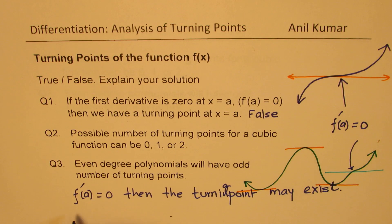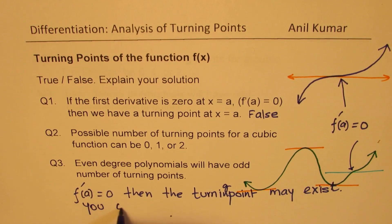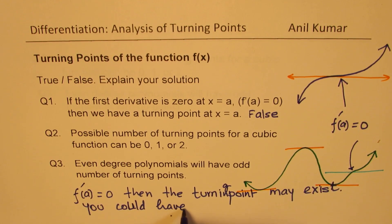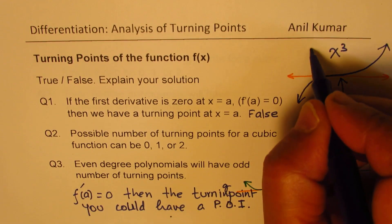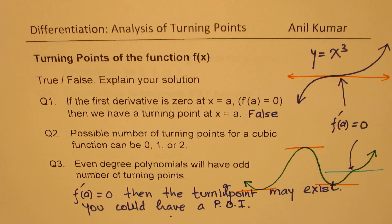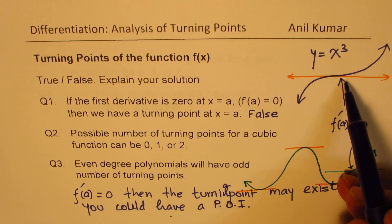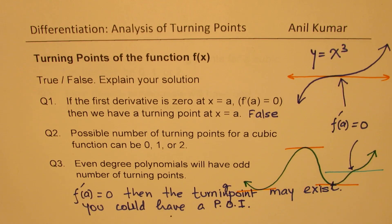You could have a point of inflection, as we have in the curve x cubed. So if I have y equals x cubed, at x equals zero we have a horizontal tangent line. However, we do not have a turning point. Now to answer the second and third questions, let's move on to the next page.